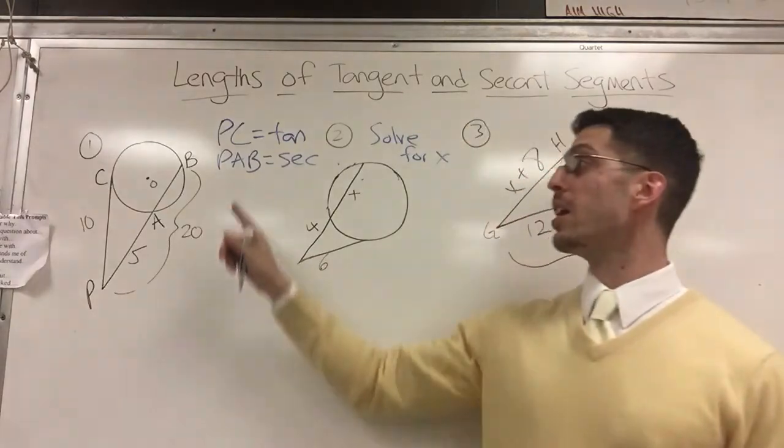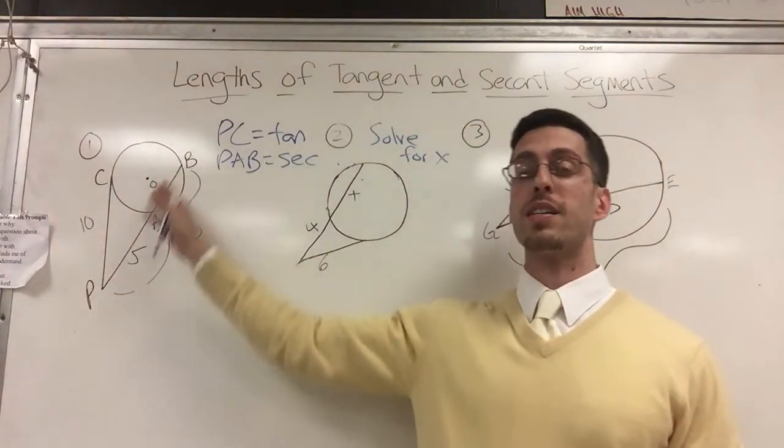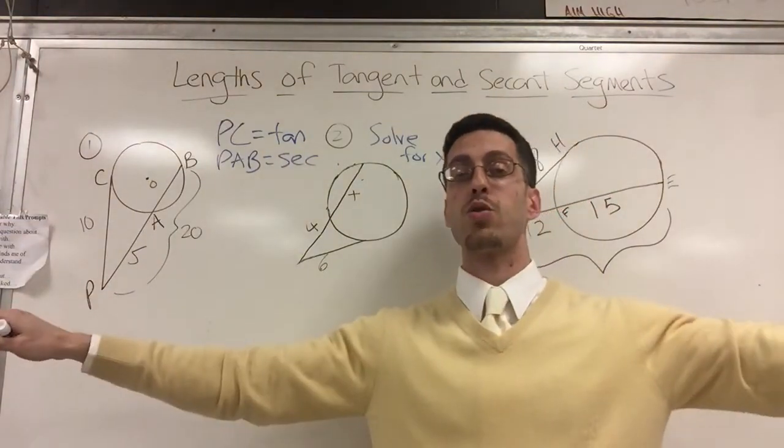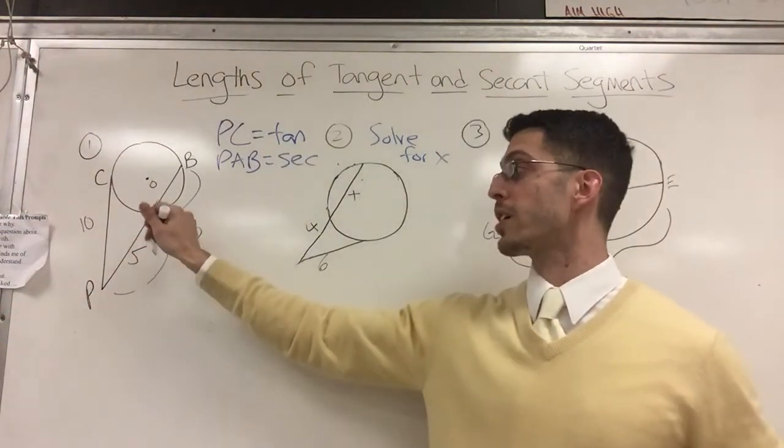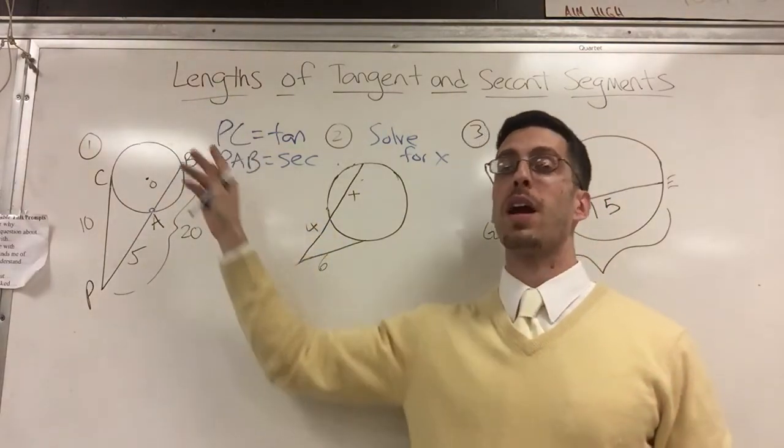Then PAB, which is here, PAB is a secant. The secant is a line that goes through a circle and intersects it twice, here and here. Hypothetically you could keep going, but I only want the segment for today.